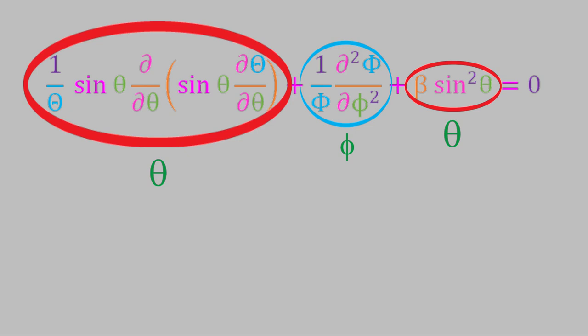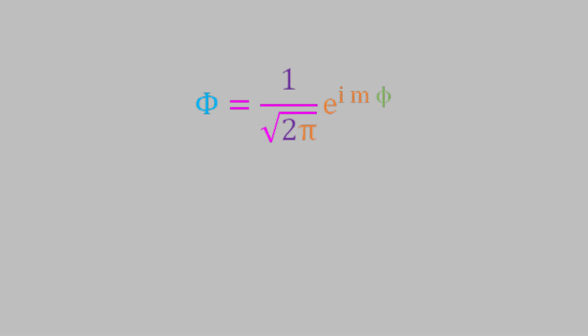Both parts of this equation are differential equations that have known solutions. Let's look at each part individually. First we'll look at the part involving phi. When we solve it, we find out that the function capital phi turns out to be equal to this: 1 over the square root of 2 pi times e to the im phi. In this equation, i is the imaginary number i, the square root of negative 1, and m is an integer. So m could be 0, positive or negative 1, positive or negative 2, and so on. Each of those different values for m will give a different numerical result for capital phi. So that's the equation for the function phi.